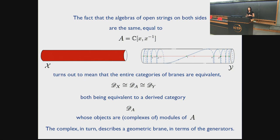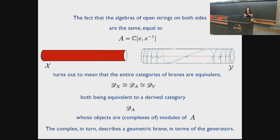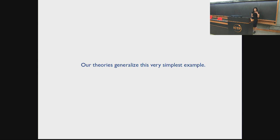Objects of that derived category are complexes of modules of the algebra. These complexes describe your geometric brane in terms of the generators. Because the generators are the same, once you have a description on one side of a brane as a complex of the generators, and the algebra of open strings is the same, you can just carry it to the other side. The two categories become literally the same via this middle one. Our theories will generalize this very simplest example, which is what will eventually make them solvable.